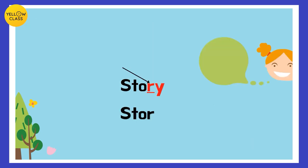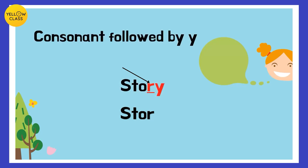Let's look at the first word: story. Here there is a consonant 'r' right before 'y'. In this case — consonant followed by 'y' — we add 'ies'. The 'y' gets kicked out and 'ies' gets added. So story becomes stories. If a consonant is followed by 'y', the 'y' gets kicked out and 'ies' gets added. One story, many stories.